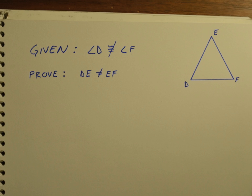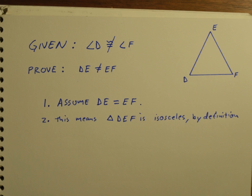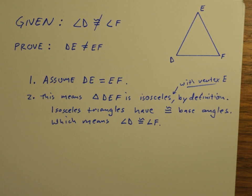Let's look at one more example. We have triangle DEF. We're given that angle D is not congruent to angle F, and we're trying to prove that DE is not equal to EF. Let's assume the opposite of what we're trying to prove: assume DE equals EF. That means triangle DEF is isosceles, because by definition two congruent legs means isosceles. Isosceles triangles have congruent base angles, which means angle D must be congruent to angle F — and there's our contradiction.